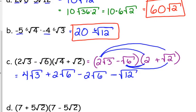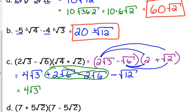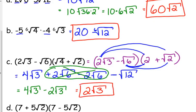There is always going to be simplifying to be done here. We have plus 2 square roots of 6 minus 2 square roots of 6, so those cancel out. 4 square roots of 3 is as simplified as that piece gets. The square root of 12 simplifies to 2 square roots of 3. Then 4 minus 2 — they are the same root, so we can subtract their coefficients. All of this boils down to 2 square roots of 3.